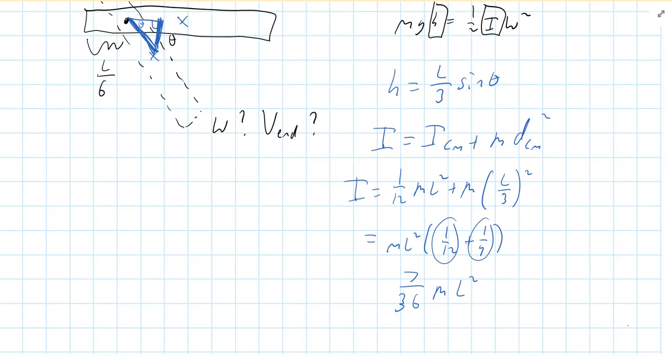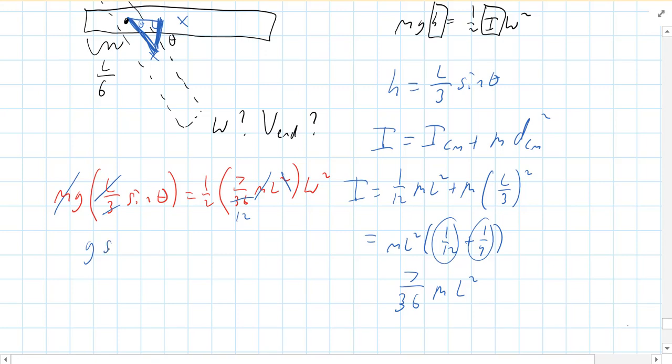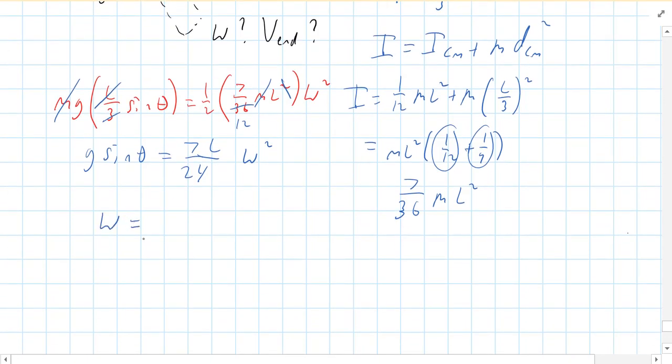Now, we can answer our question. What's the angular velocity of the bar at that moment? So, we got MG. The height we figured out was L over 3 sine of theta. And that equals 1 half I, which is 7 over 36 ML squared times omega squared. Again, some stuff cancels. One of the masses drops out. Or the mass drops out. One of the L's drops out. So, and you can even cancel this 3 and make this a 12 if you like. So, here I get G sine of theta. This would just become 7 over 24 L omega squared. And if you solve for omega, you get the square root of 24 G sine theta over 7 L. So, that would be your omega at that moment.